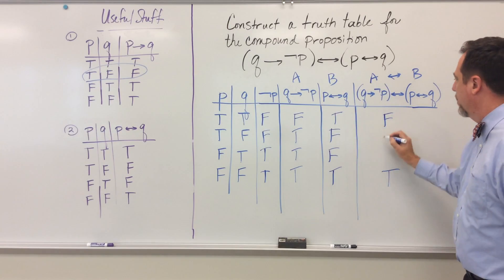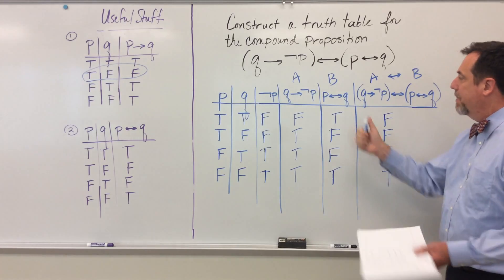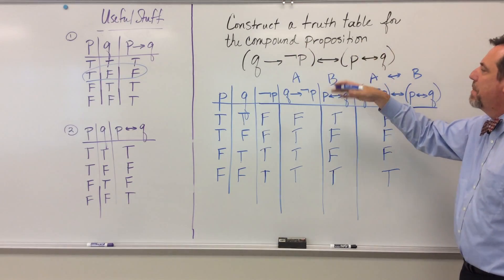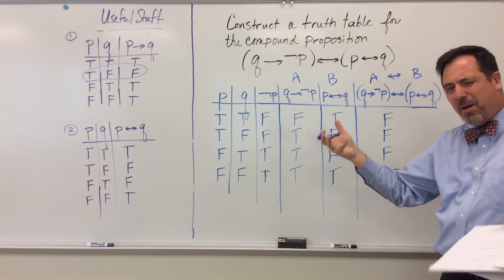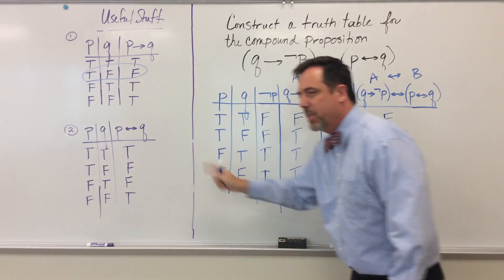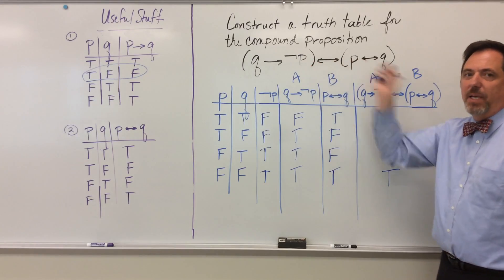And my cheat sheet over there under useful stuff, of course, tells me those must be false. So there you have it. But because we broke down this fairly confusing compound proposition into its sort of atomic parts, we were able to quickly use basic truth tables to solve this problem and write the truth table for this big, ugly beast.